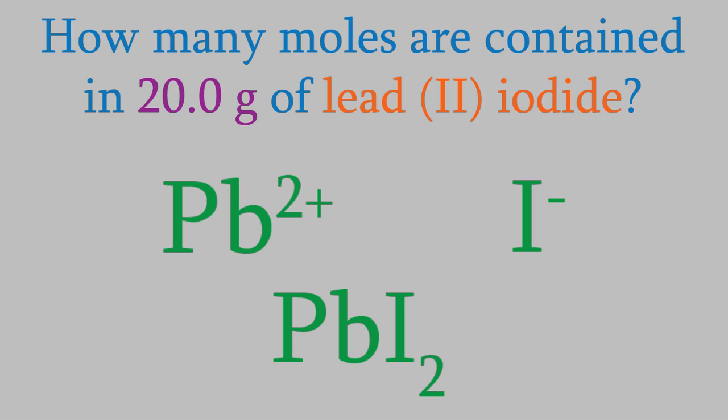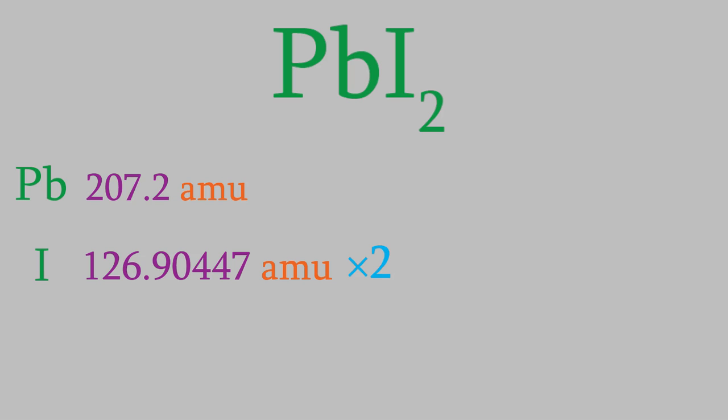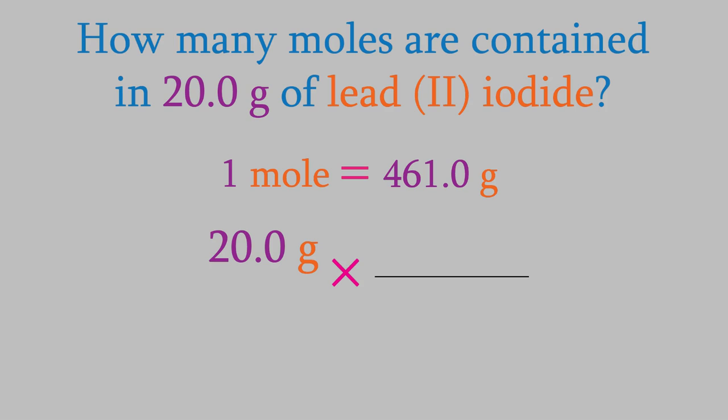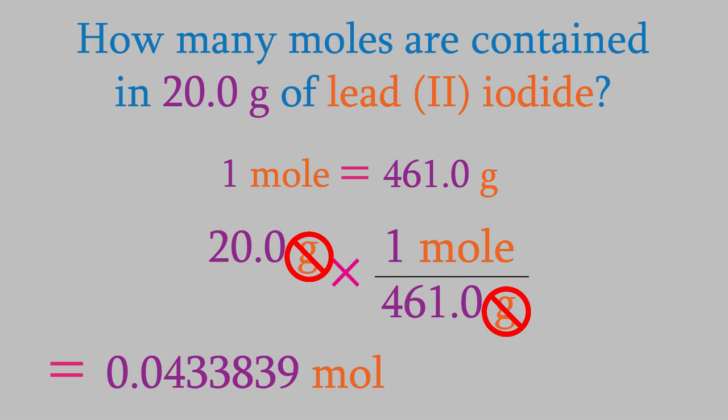So our question is asking how many moles of PbI2 are in 20.0 grams? To find out, we need the conversion factor from grams to moles. Again, we get that by looking at the periodic table. Remember that we have two iodines, so the mass of iodine must be multiplied by 2. So we find that one mole of lead (II) iodide weighs 461.0 grams, so that's our conversion factor. We want the grams to cancel out, so the grams goes in the denominator of our fraction, and our answer turns out to be 0.0433839 moles. Don't forget to use the correct number of significant figures. Of the numbers we started with, this one had 3 sig figs and this one had 4, so our answer should have 3 sig figs. Remember, the zeros at the beginning aren't counted as significant, so our final answer is 0.0434 moles.